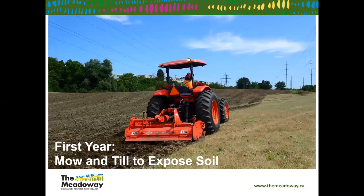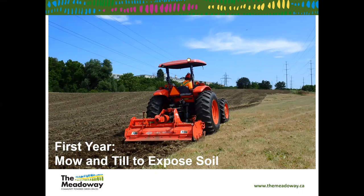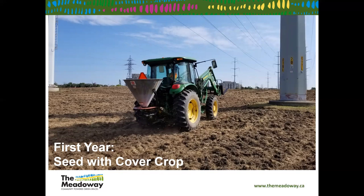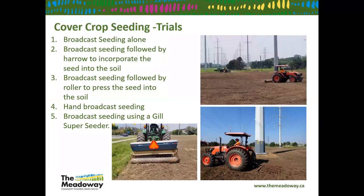We mow, till, and expose soils, which brings up the seed source hidden under the soil. Tilling causes seeds to break open and germinate, and then we till again — the plant comes up, we break up the root system, and hopefully we're not spreading too many invasives. At the same time, we seed with a cover crop using a broadcast seeder — it could be rye, oats, or millet — spread out throughout the field at a high ratio.